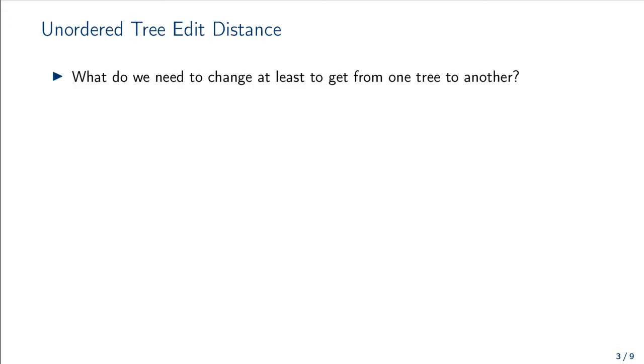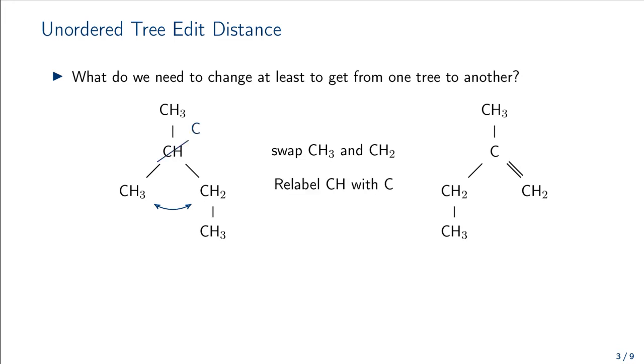The unordered tree edit distance is such a metric. It is defined as the cost of changing one tree into another where swaps have zero cost. In this example here, we can swap the order of subtrees, relabel CH with C and relabel CH3 with CH2 and we have transformed our isopentane molecule into the molecule on the right.